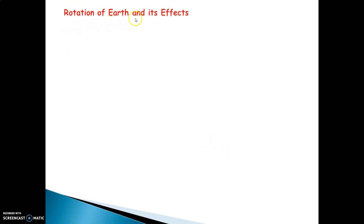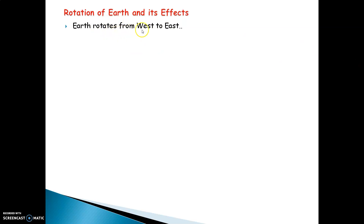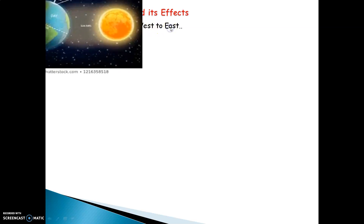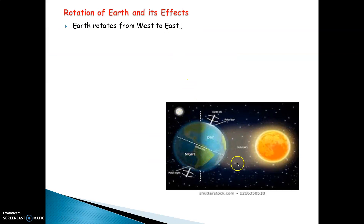Rotation of earth and its effects. Earth rotates from west to east. While revolving around the sun, it also rotates around itself from west to east. In this picture you will realize there is an earth and there is a sun. While the earth is rotating around itself, half part of the earth faces the sun.